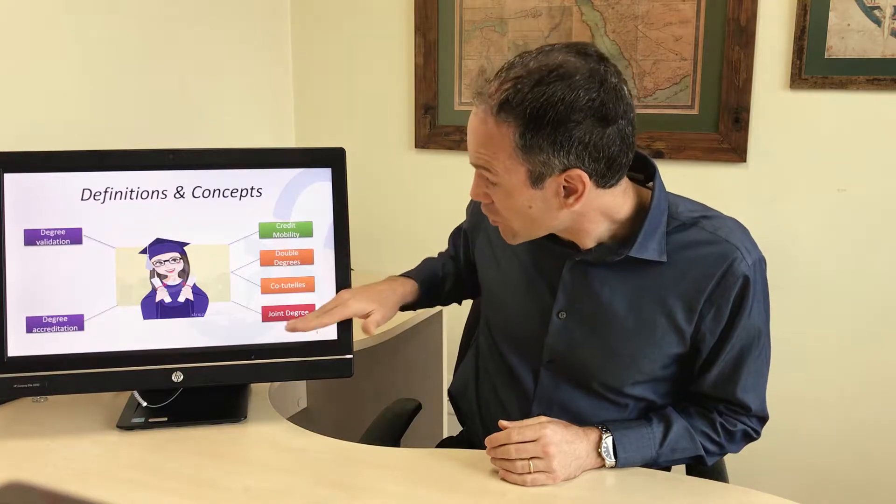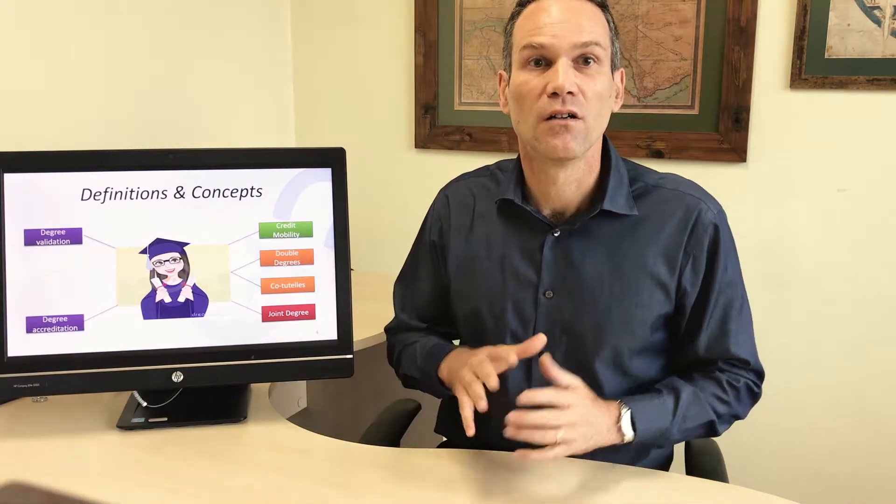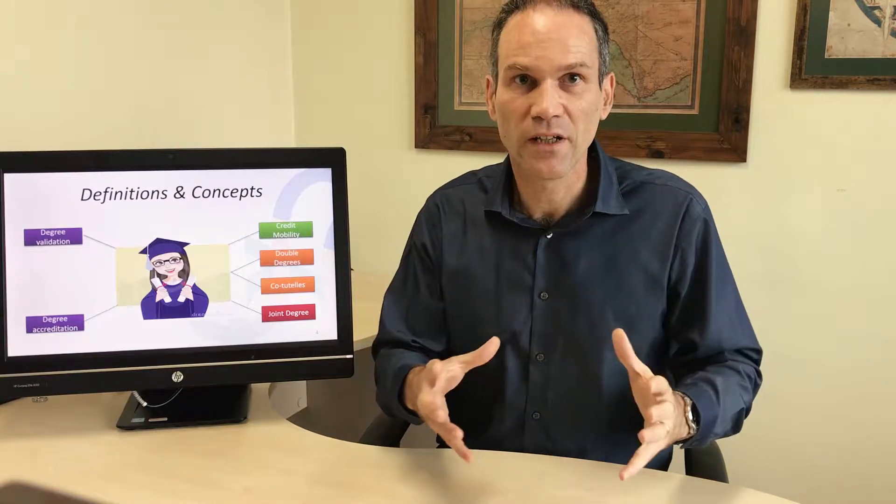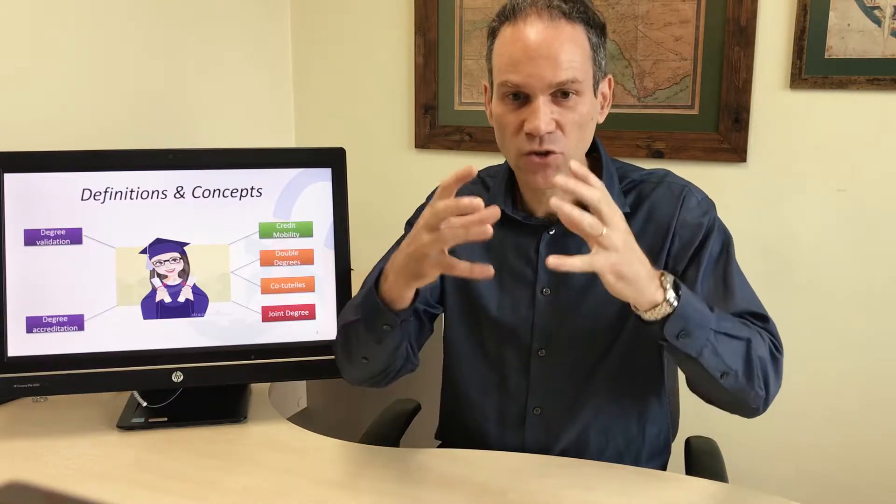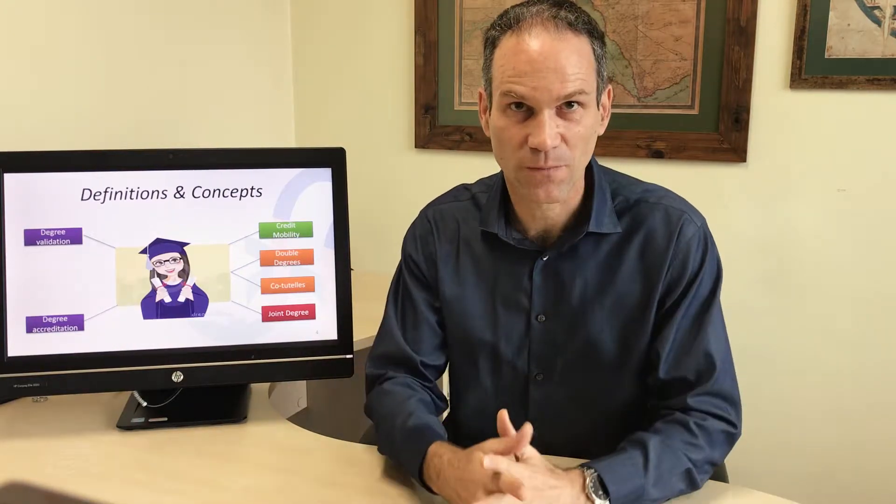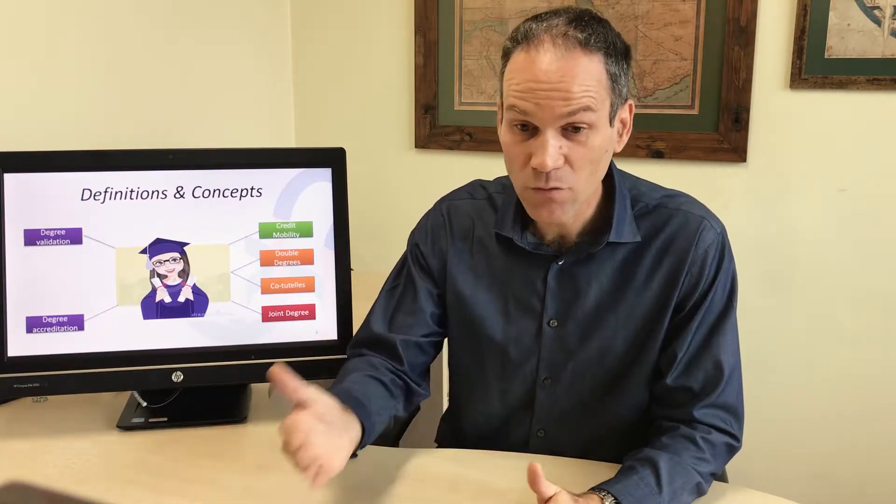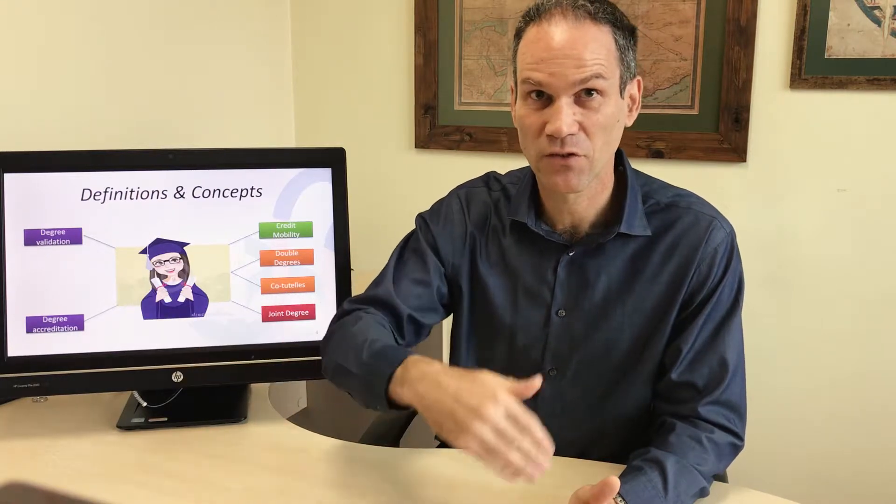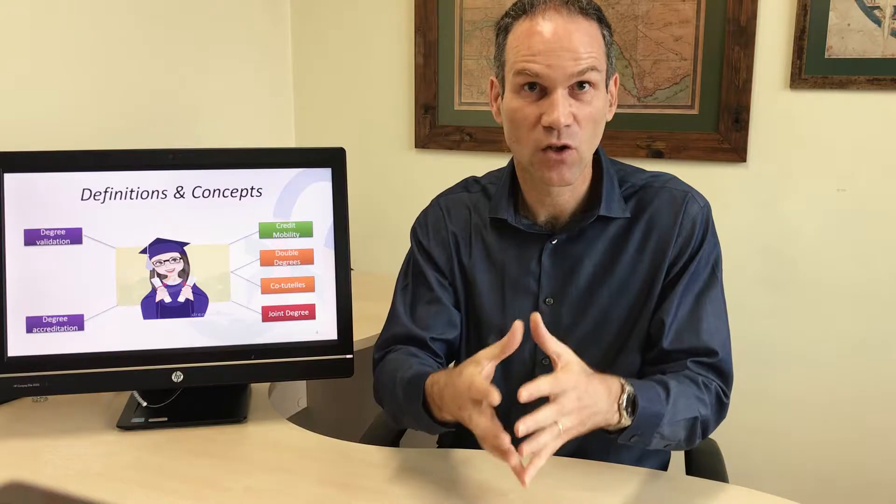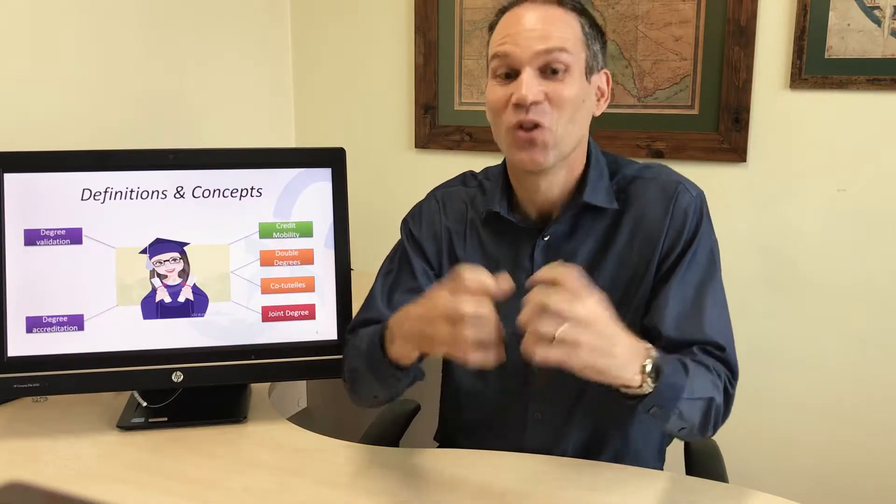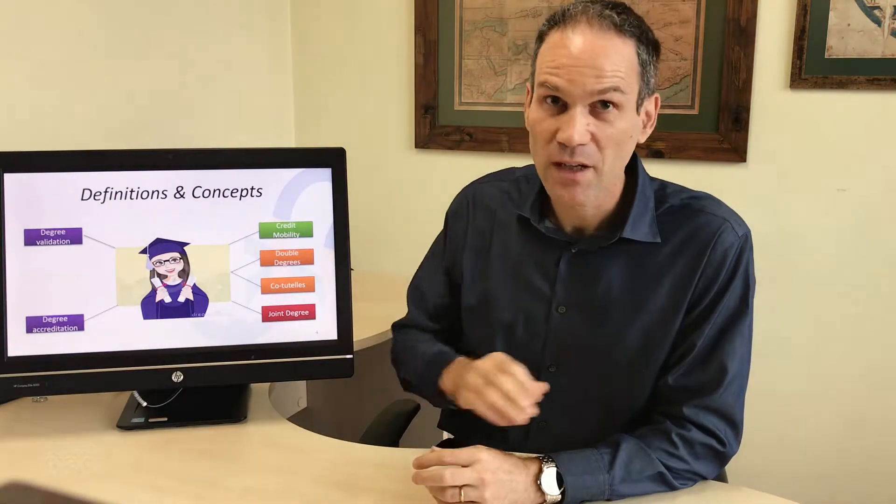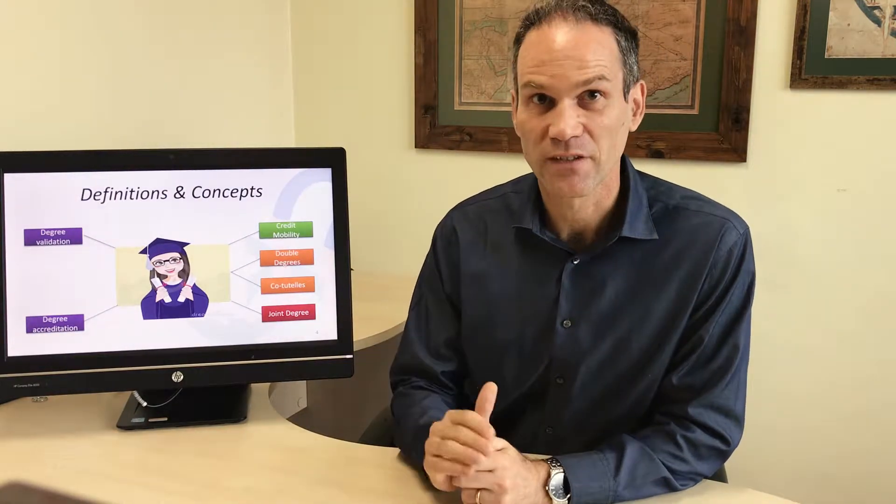On the other hand, you have joint degrees. At least two different institutions agree that they will give one unique degree in the end, combining different formations. There is of course student mobility involved because students will do part of the studies in another institution, but it's one unique degree in the end which is awarded. So it's not a double degree because it's also one degree. In many ways, joint degrees are much more complicated than double degrees.